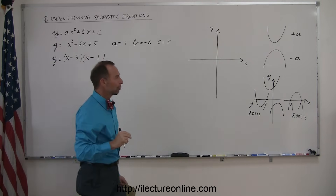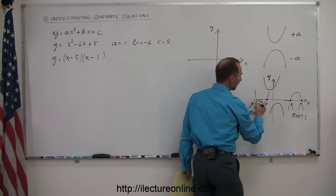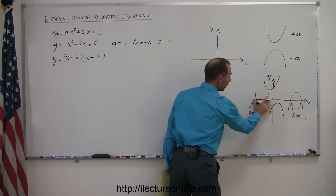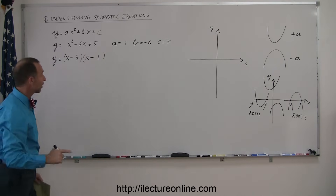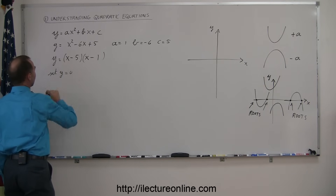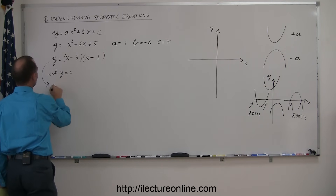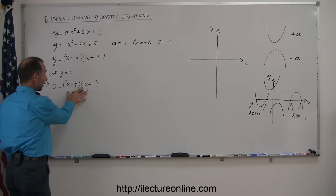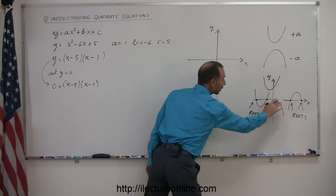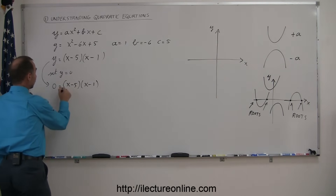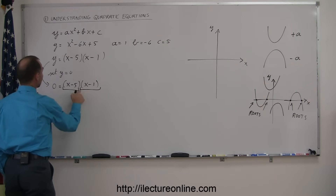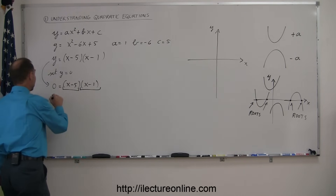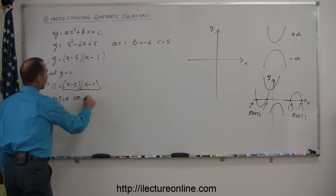If we want to find the roots, realize that the roots are the points that lie on the x-axis, meaning the y value equals 0. So to find the roots, we set y equal to 0. The equation becomes 0 equals x minus 5 times x minus 1. If two quantities multiplied together equal 0, then either x minus 5 equals 0 or x minus 1 equals 0.